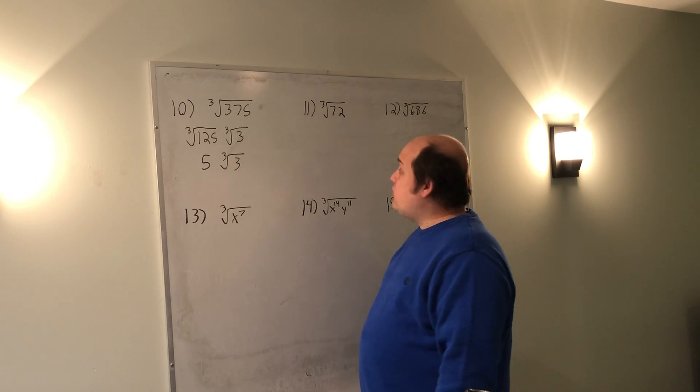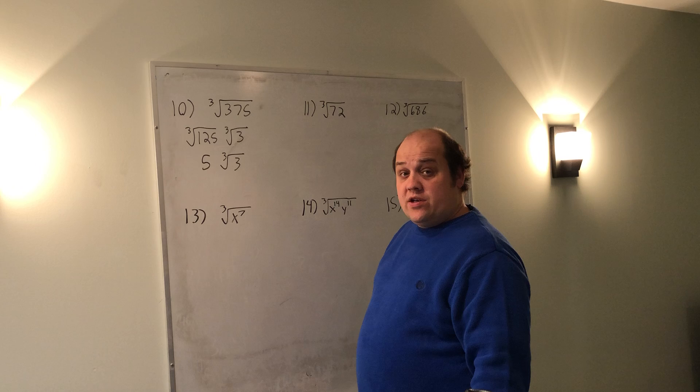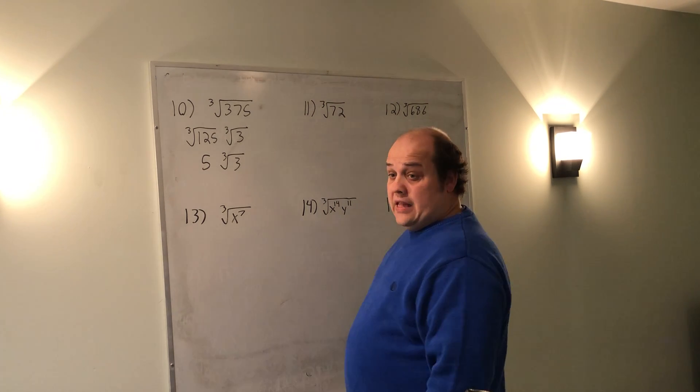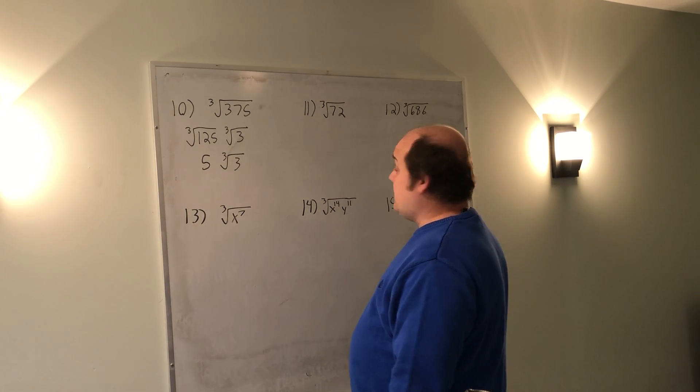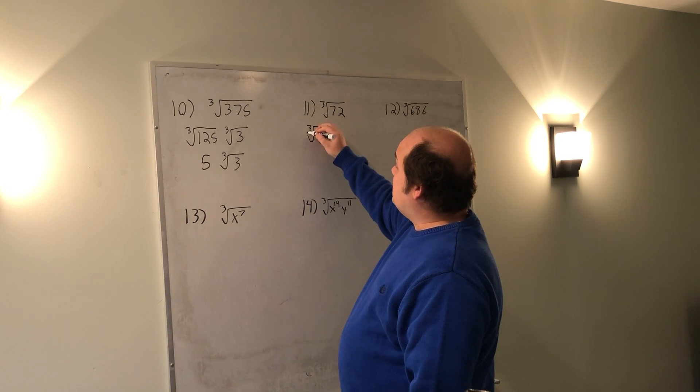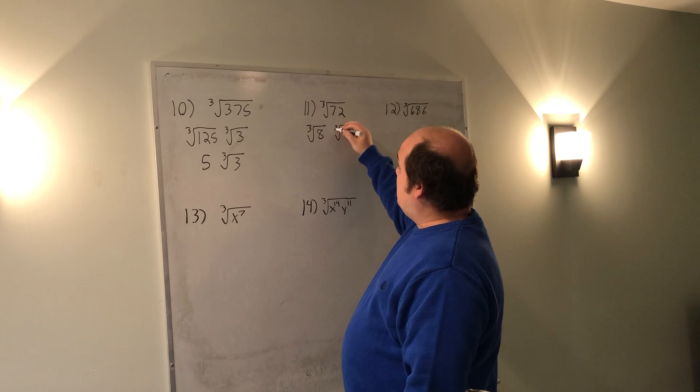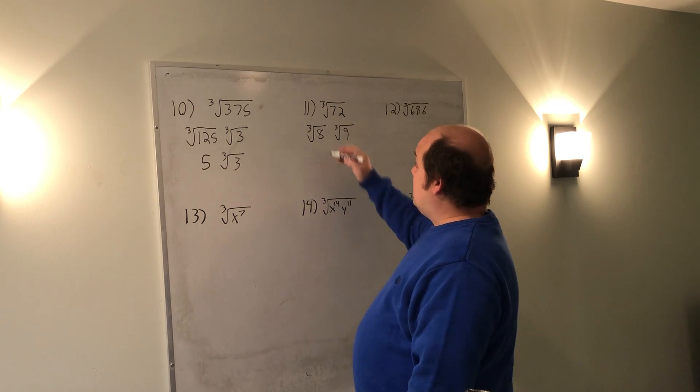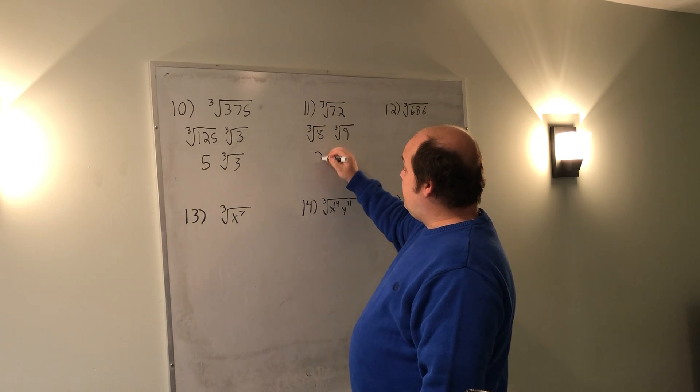When I go to the cube root of 72, I start by trying to divide 64 into it. Doesn't work. Then I try and divide 27 into it. Doesn't work. Then I try and divide 8 into it, and it does work. It becomes the cube root of 8, the cube root of 9. Cube root of 8 is a perfect cube. 2 comes out, leaving behind the cube root of 9.